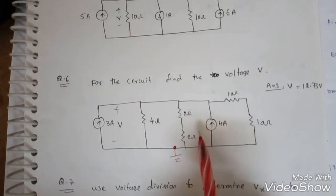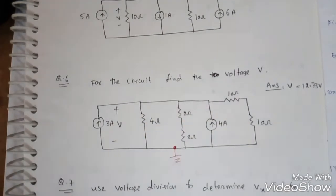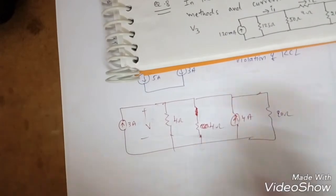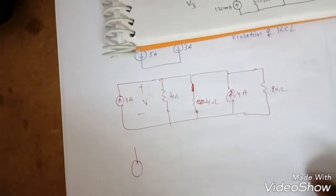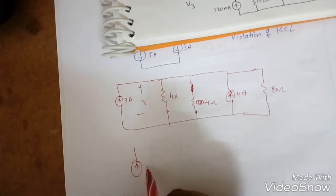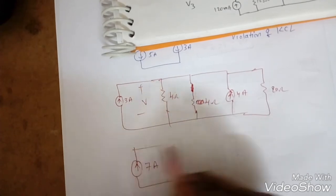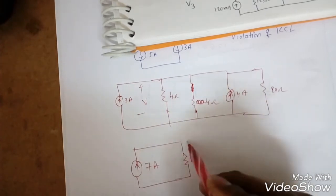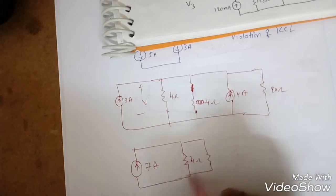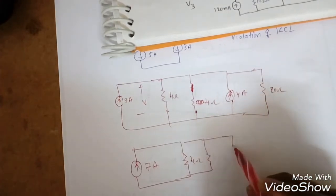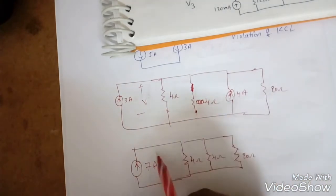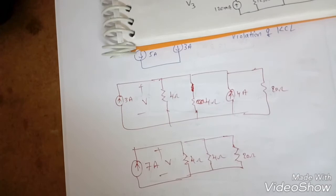The 3-ampere and 4-ampere sources are both going upward and are in parallel, so they can be combined. Both are going upward, so they add to give 7 amperes. The 4-ohm and 2-ohm resistances in series become 6 ohms — wait, the two 2-ohm resistances in series become 4 ohms, and the two 10-ohm resistances in series become 20 ohms. So V is across these equivalent resistances.